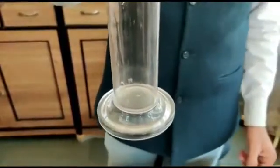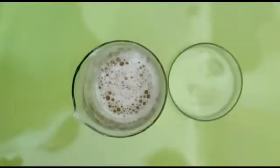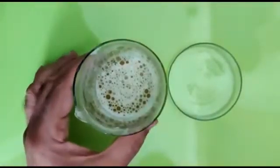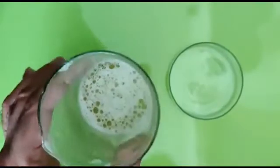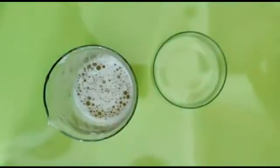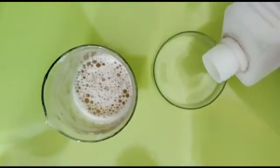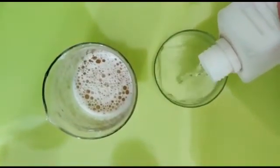You can see that drop by drop, the filtrate is coming down. So now this is the filtrate. In this petri dish, we are taking chilled ethanol, three to four ml of chilled ethanol.